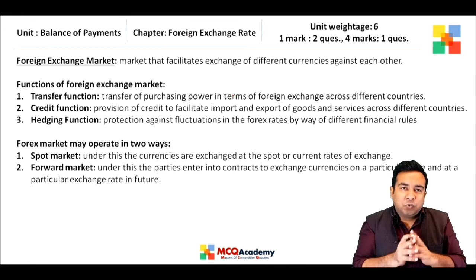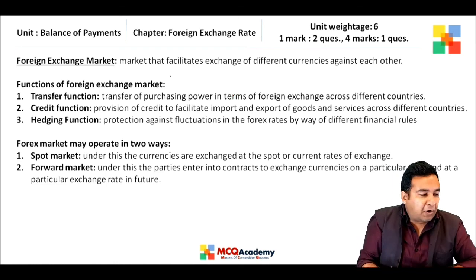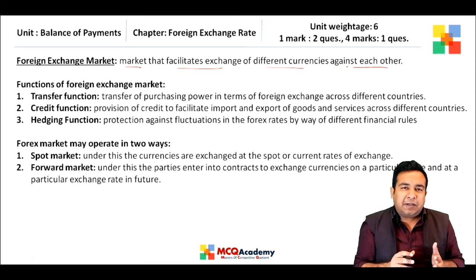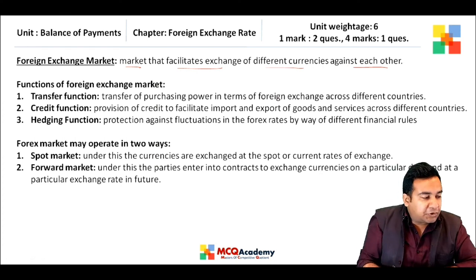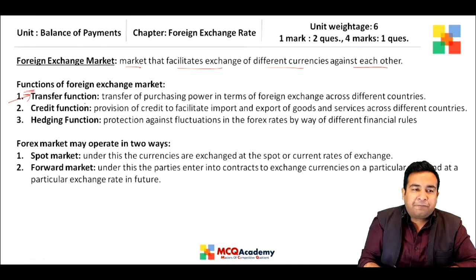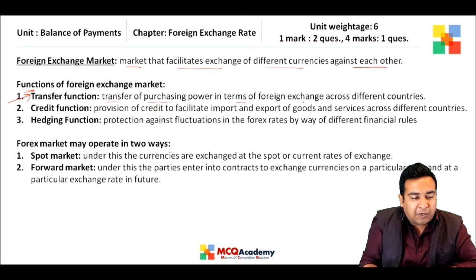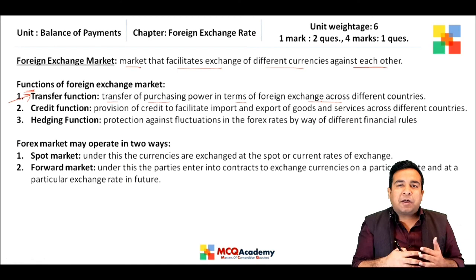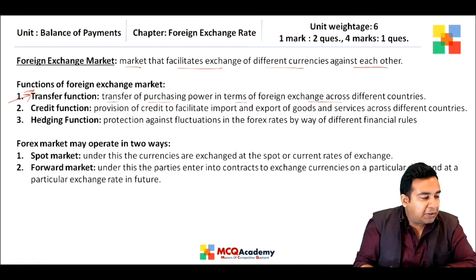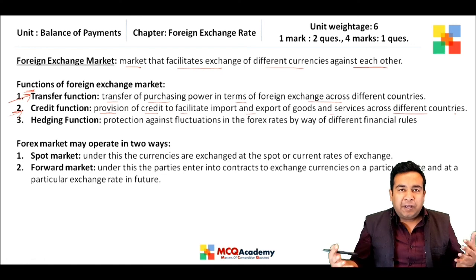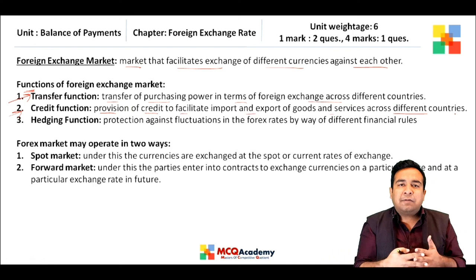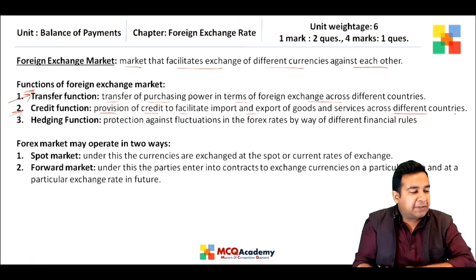Next comes the working of the foreign exchange market. The foreign exchange market is the market that facilitates the exchange of different currencies against each other. Its functions include: the transfer function — transfer of purchasing power in terms of foreign exchange across different countries, covering imports and exports — and the credit function — provision of credit to facilitate import and export of goods and services across different countries.